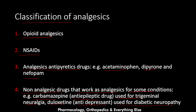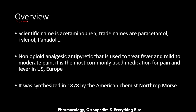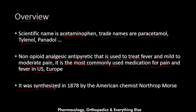Another example is duloxetine, which is an antidepressant drug used for diabetic neuropathy. Now for an overview of acetaminophen: the scientific name is acetaminophen, and the most famous trade names are paracetamol, Tylenol, and Panadol. It is a non-opioid analgesic antipyretic used to treat fever and mild to moderate pain, and it is the most commonly used medication for pain and fever in the US, Europe, and most probably worldwide.